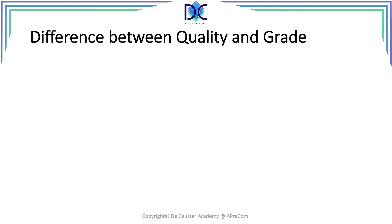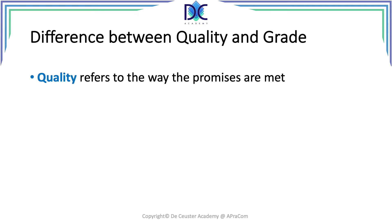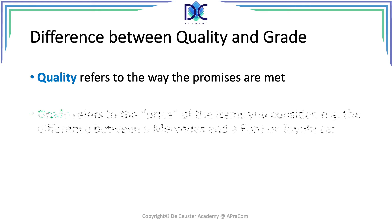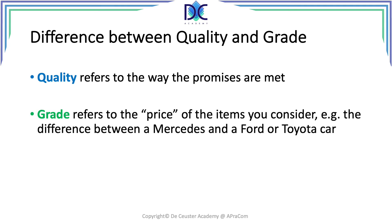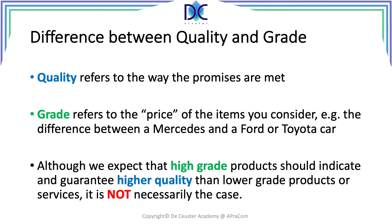An important distinction: we have to make the difference between quality and grade. Sometimes people say, 'I have a nice Mercedes so that's a quality car.' Basically that's not true. Quality refers to the way promises are met — we promise a product with certain specifications and how well are we keeping that promise. Grade refers to the price of the item, for example the difference between a Mercedes, a Ford, or a Toyota car. Although we expect a high-grade product to guarantee higher quality, this is not necessarily the case.